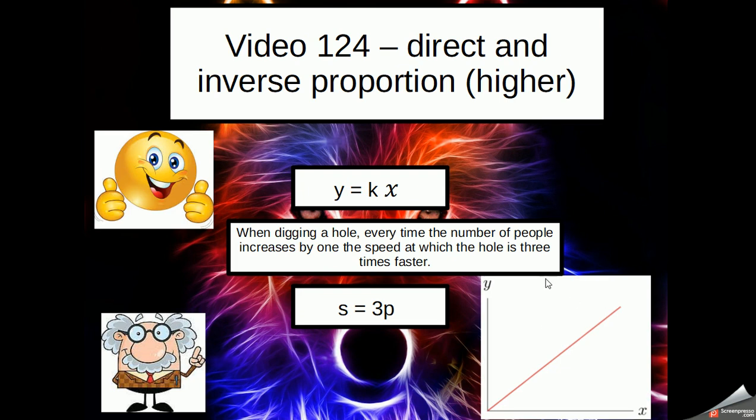Direct proportion, when it shows itself on a graph in a linear form, looks like this. So as y increases, so does x. It can have any gradient, but the important point is that it passes through the (0,0) point. If we add one on or subtract one on, it's not going to be directly proportional.